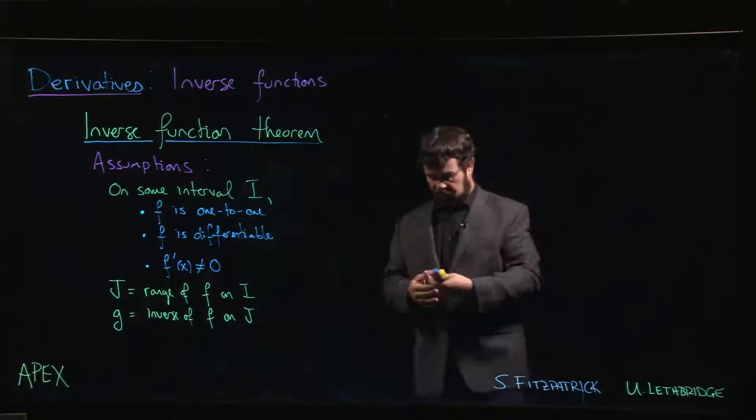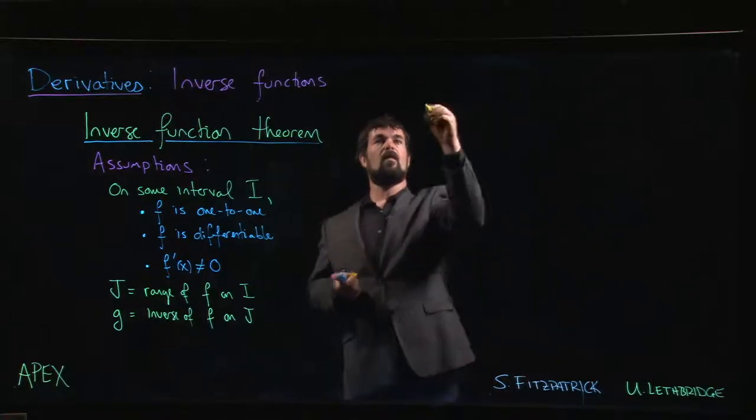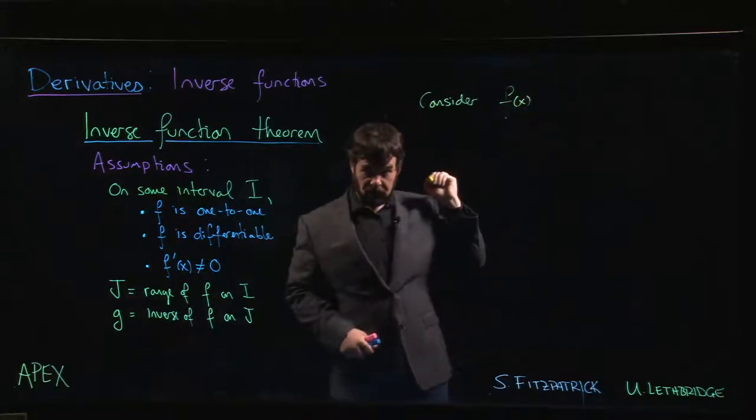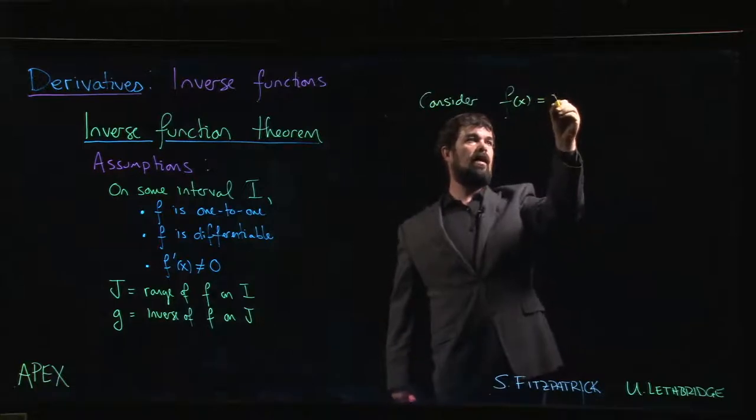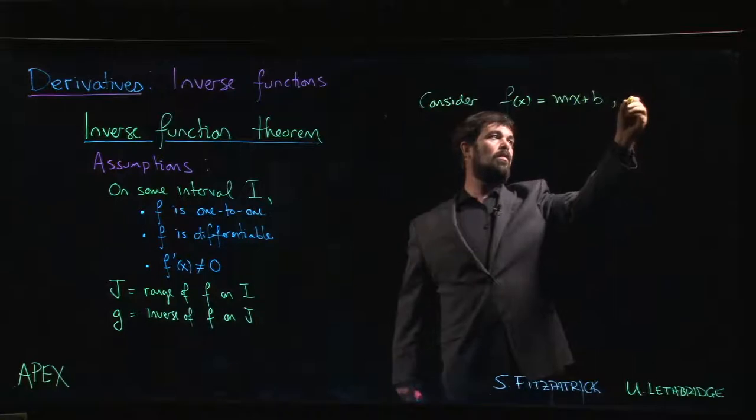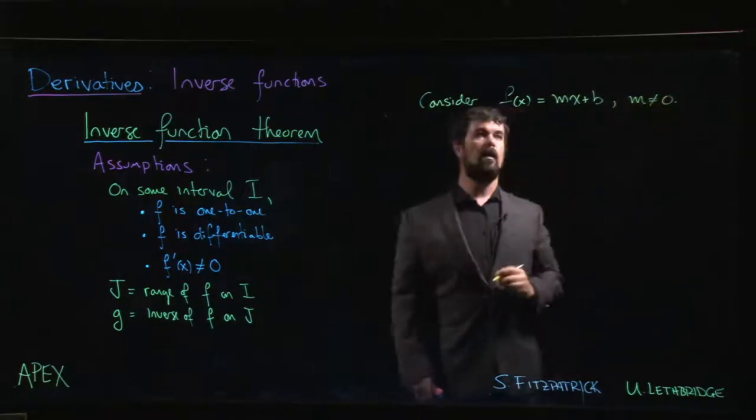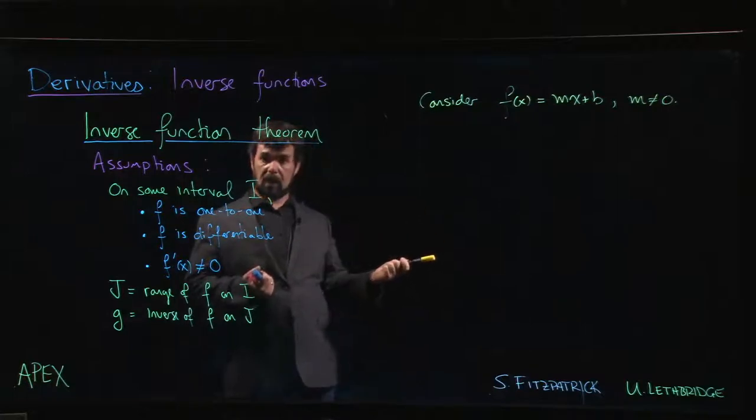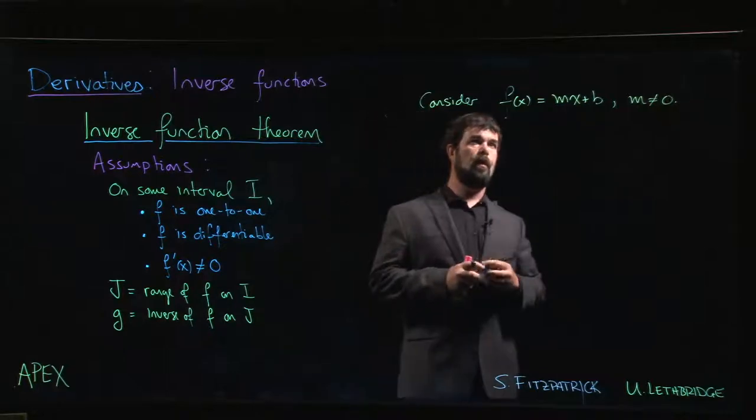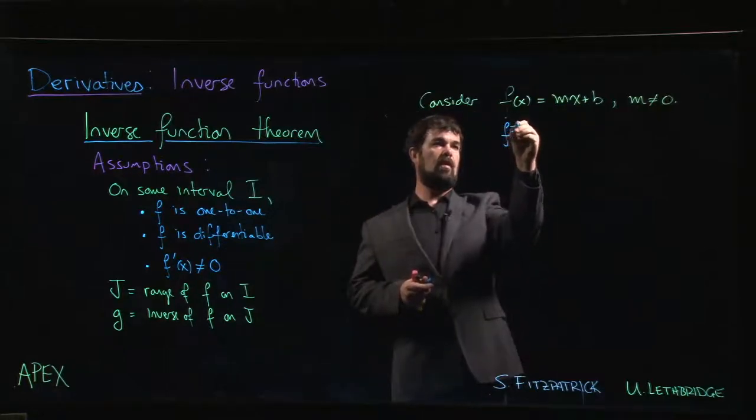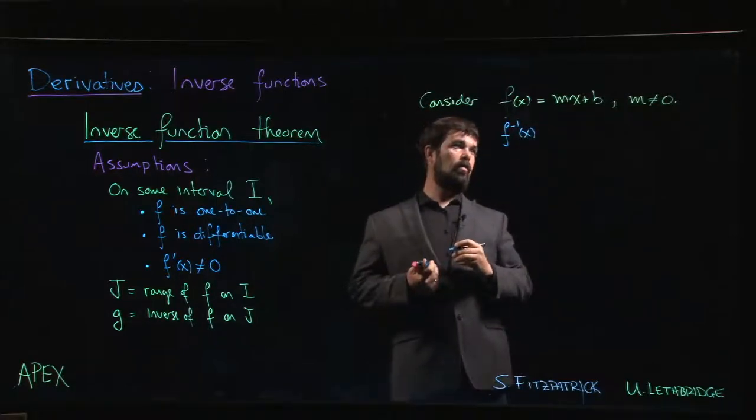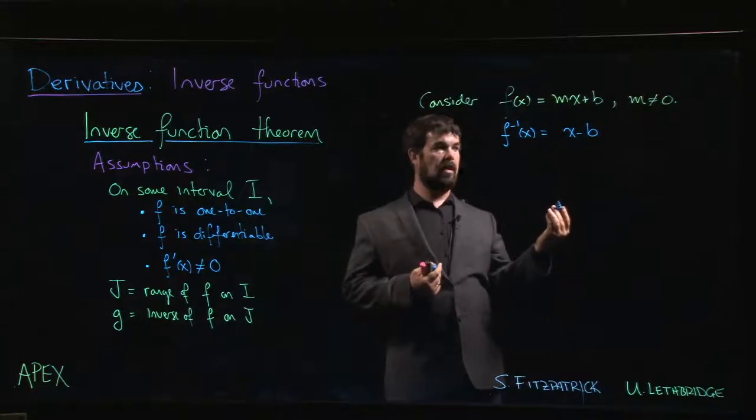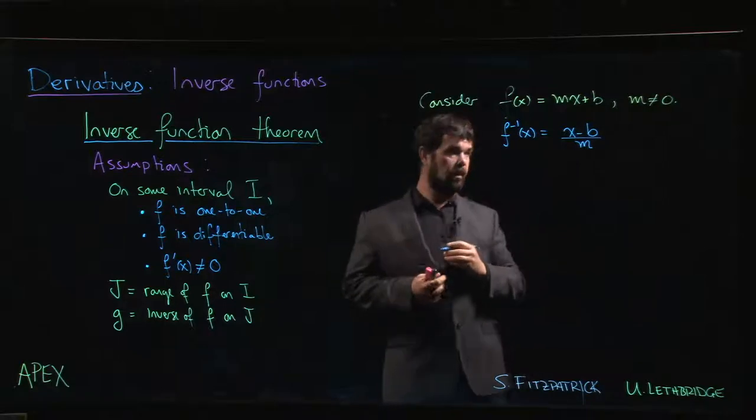Before we do, let's consider a slight generalization of the example we just looked at. Let's look at a linear function: f(x) = mx + b, where m is nonzero. Remember that we can think things through here, we can come up with the inverse. So what does this function do? First it multiplies by m, then it adds b. If we wanted to get the inverse of that, we want to undo things. We have to undo in the opposite order, so the last thing we did was add b, so the first thing we do here is subtract b. Then we undo the multiplication with division.